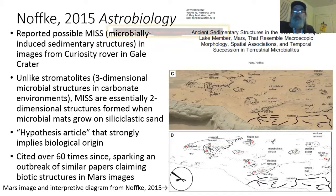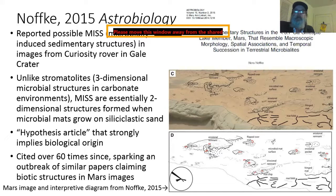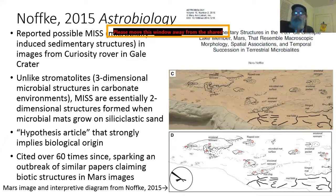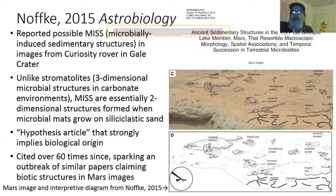Microbially induced sedimentary structures are made by microbial mats, but unlike the more familiar stromatolites — which are three-dimensional microbial structures built up by mats in carbonate environments — microbially induced sedimentary structures are two-dimensional. They form on the surface of siliciclastic sand and other silicate minerals. As a result, they are more difficult to recognize than stromatolites, which stick out of the rock in three dimensions, and you can measure many different features of them, whereas MISS are really just slight irregularities on the surface.